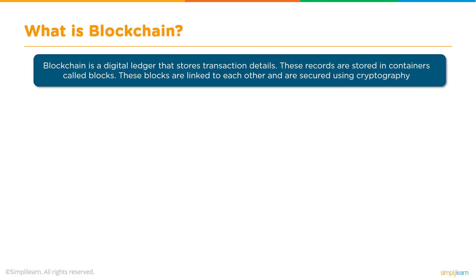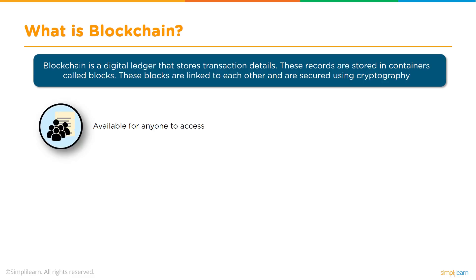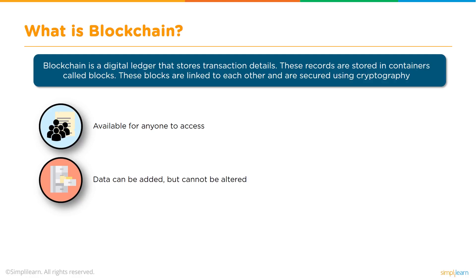What is blockchain? Blockchain is a digital ledger that stores transaction details. These records are stored and aggregated in containers called blocks. These blocks are linked to each other and are secured using cryptography. Blockchain is something which is available for anyone to access, and data can only be added — we cannot alter any information which has been added.